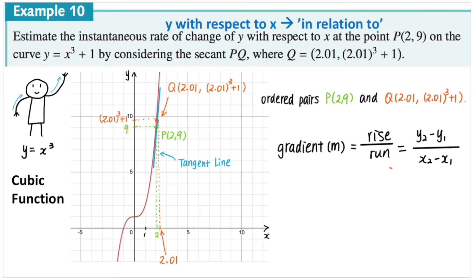Here's an example: estimate the instantaneous rate of change of y with respect to x at the point P(2, 9) on the curve y equals x cubed plus 1, by considering the secant PQ where Q has a given coordinate. Since x cubed means we have a cubic function, if we accurately plot the graph it looks like this. We want to find the instantaneous rate of change and we know one point — point P.